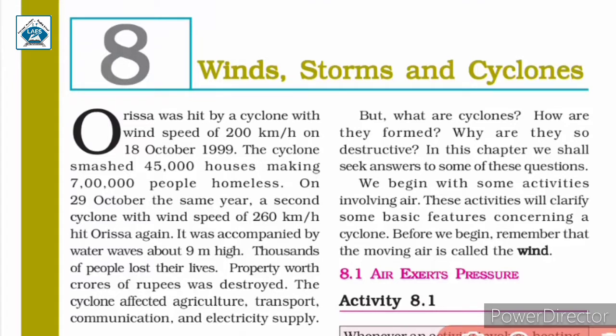Hello students, let us begin Chapter 8: Winds, Storms and Cyclones. Orissa was hit by a cyclone with wind speed of 200 km per hour on 18 October 1999.